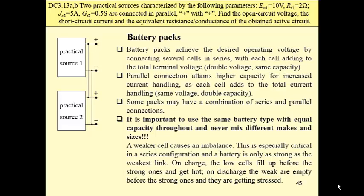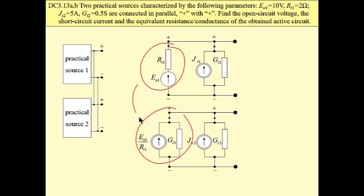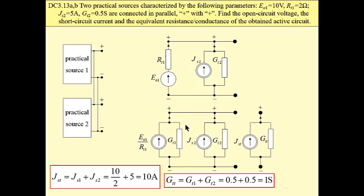In this exemplary problem, we have a parallel connection. The first battery is described by its Thevenin equivalent, and the second by its Norton equivalent. We have a parallel connection, and it is convenient to express both batteries by Norton equivalent. Then we may find the Norton equivalent of the combination. The short-circuit current is the sum of currents of each source, because the total conductance of the combination is the sum of conductances of the sources.